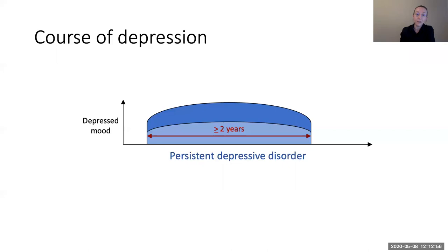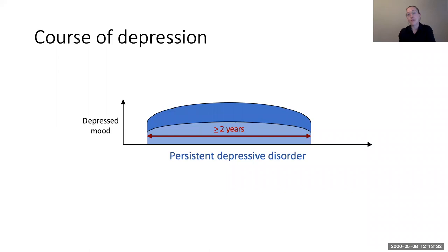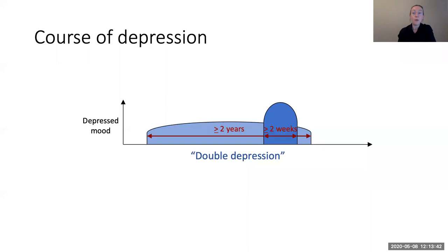Persistent depressive disorder, formerly dysthymic disorder, only requires depressed mood for about half the time, as opposed to most of the time. You might think this means it's less severe, but it can actually be a particularly impairing disorder. Most people first experience it in childhood — the average age of onset is 10 years old — and the time to recovery without treatment averages over five years; some people experience dysthymia for 20 years or longer. About 80 percent of people with persistent depressive disorder also experience a major depressive episode during the dysthymic episode — that's called double depression. Because of the early onset and long time to recovery, some people can literally live their entire lives in a dysthymic episode.